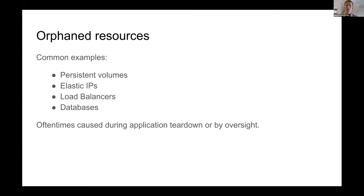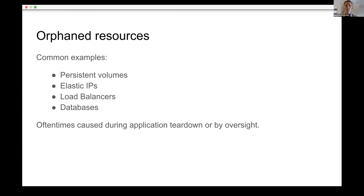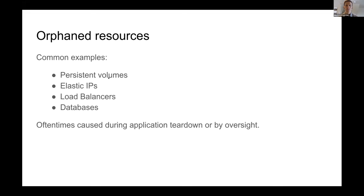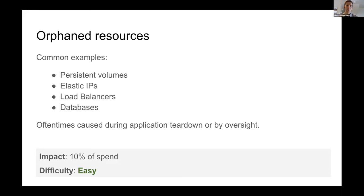Load balancers and IPs are easy to think 'I'll just expose this,' and then the project gets handed off to a different team, or during tear-down you eliminate the deployment but forget to eliminate the load balancers. Over months or years that piles up and you can find a treasure trove of things you can eliminate. We consider this pretty easy — the impact can be high — and by definition these things aren't being used, so it's a straightforward solution.